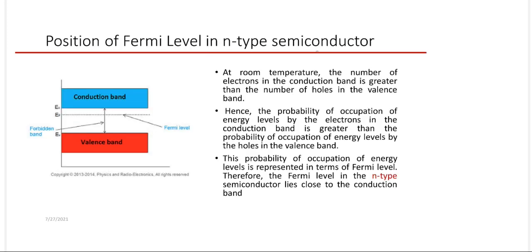For an n-type semiconductor, the majority carriers are electrons available in the conduction band, so the Fermi level shifts towards the conduction band. This position is a function of doping. The intrinsic level Ei is the Fermi level of the pure semiconductor. When n-type impurities are added, the Fermi level shifts upward towards the conduction band. The higher the donor concentration Nd, the greater the shift — for very high Nd, the Fermi level nearly overlaps the conduction band.